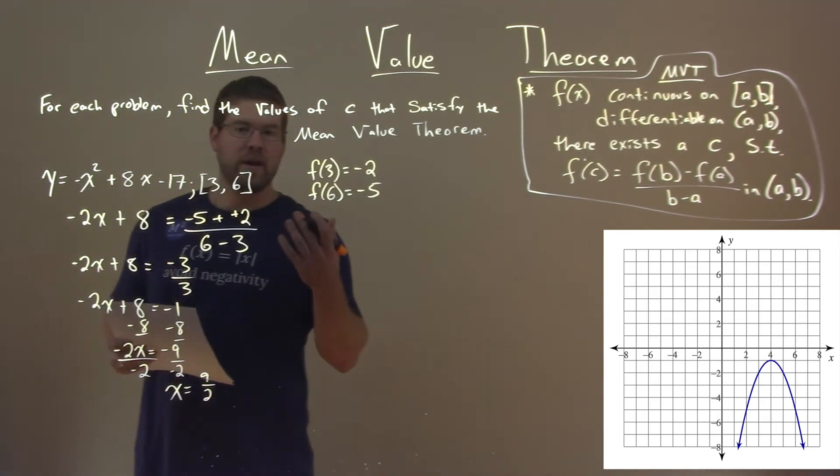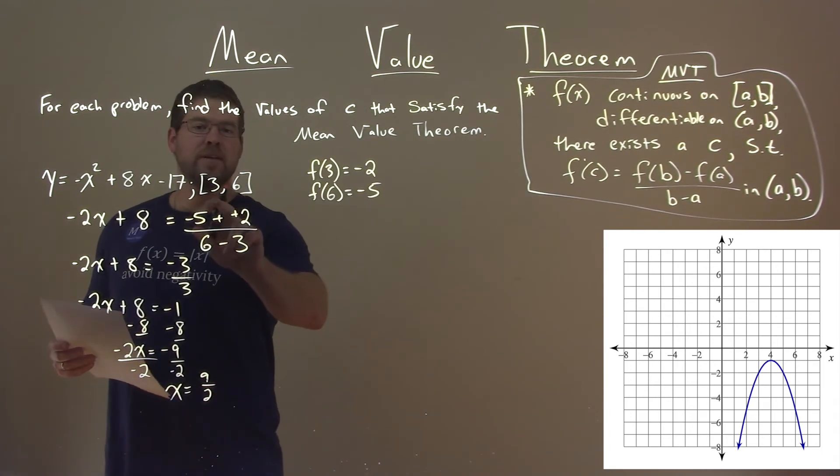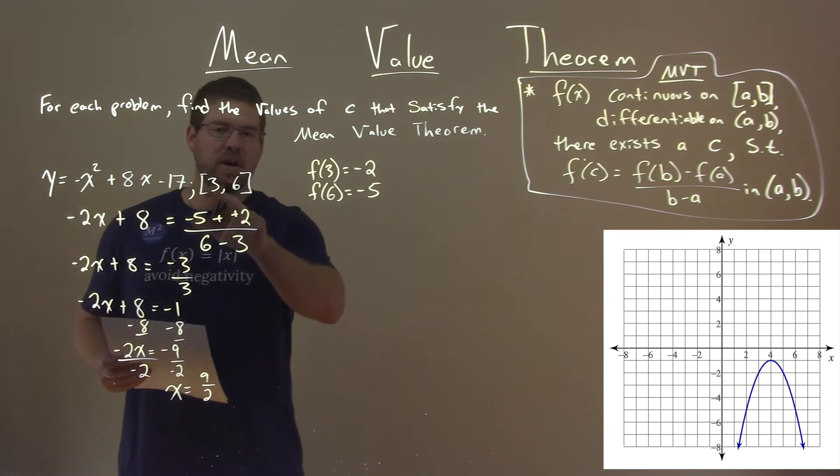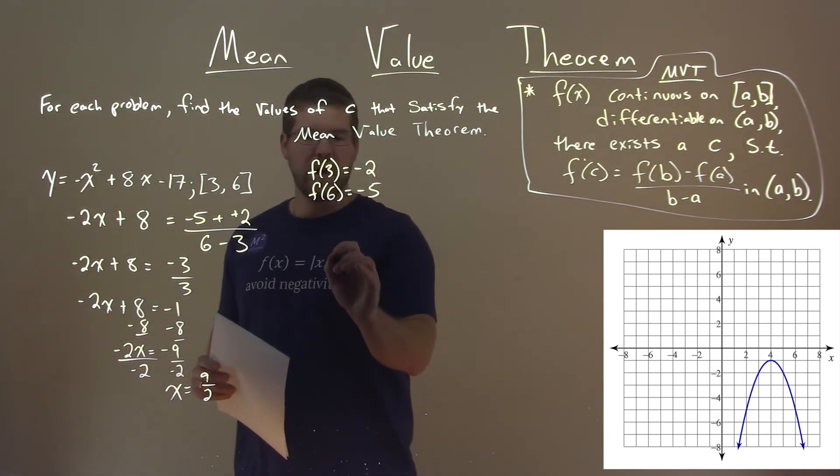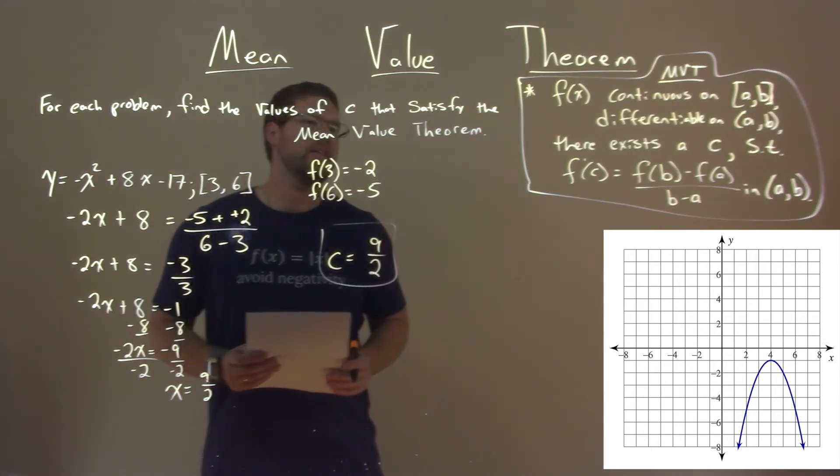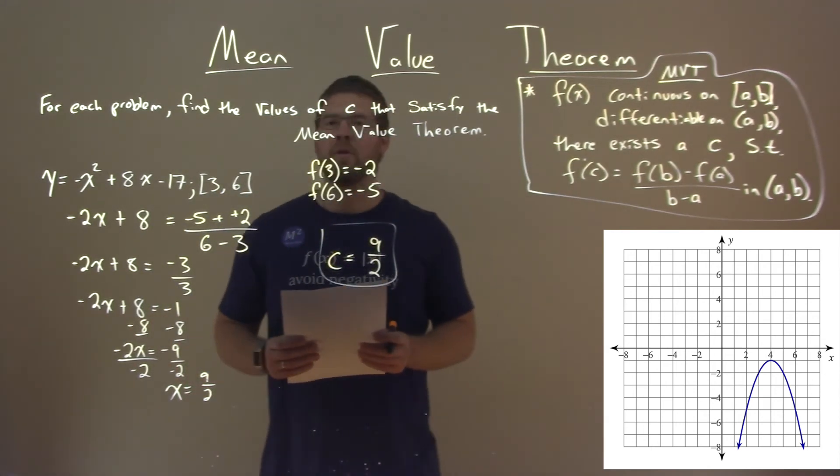And so we need to find our value for c. Now 9 halves is within our range here, or interval from 3 to 6. And so our c value here is just 9 halves, and that is the value c that satisfies the mean value theorem.